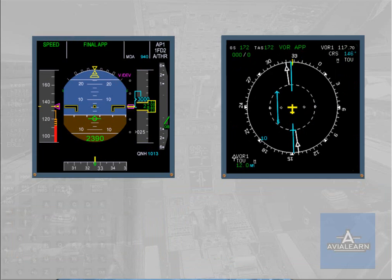Raw data information using VOR and ADF needles must be displayed to cross-check lateral deviation. Revert to heading or track in case of excessive deviation. If during the approach GPS primary is lost, a triple-click aural warning is triggered and you must cross-check your navigation accuracy.